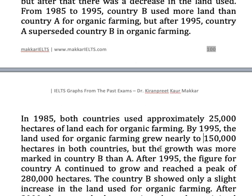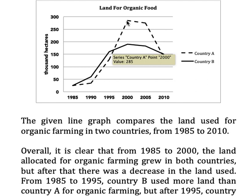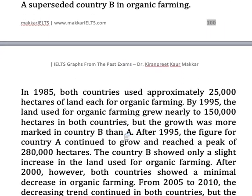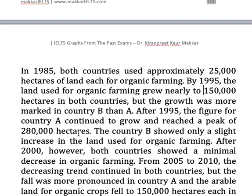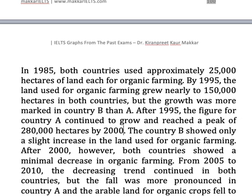After 1995, the figure for country A continued to grow and reached a peak of 280,000 hectares by 2000. You can use the word 'figure' for land use. Country B showed only a slight increase in the land used for organic farming till the year 2000.